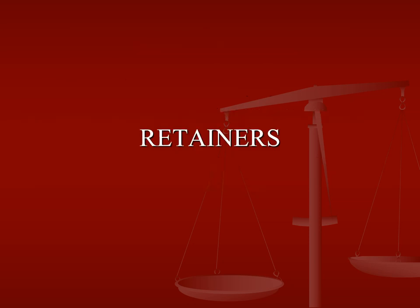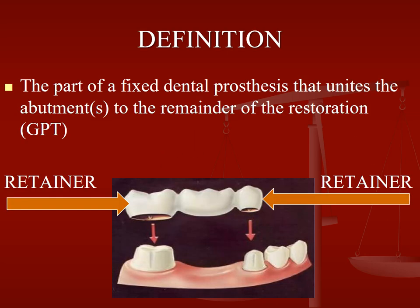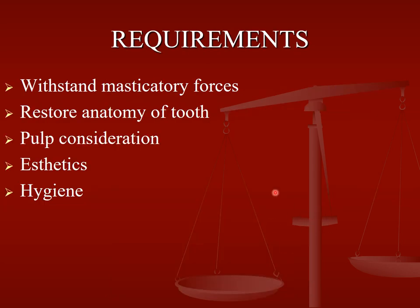Coming first to the retainer: a definition of a retainer is a part of fixed dental prosthesis that unites the abutments to the remainder of the restoration, according to the GPT — the Glossary of Prosthodontic Terms. In the photo you can see what we call a bridge as a whole. This is a retainer, in the middle is a connector, this is a pontic, and these are the abutments.